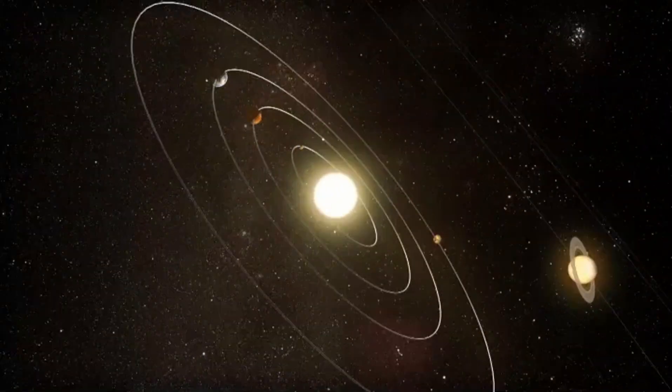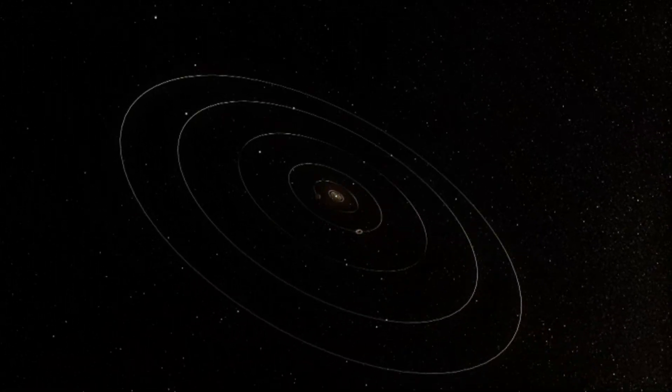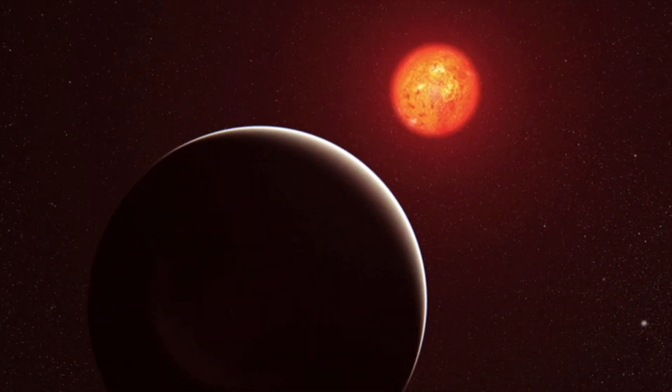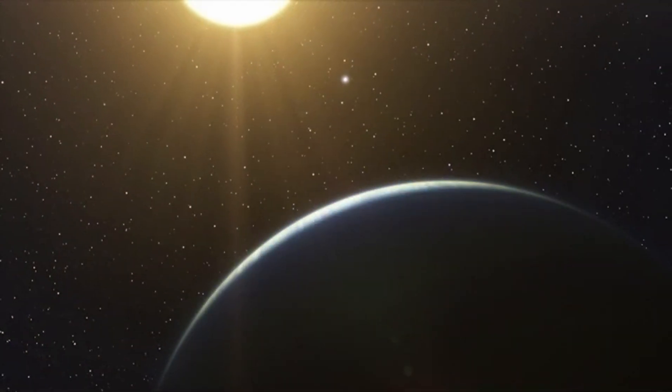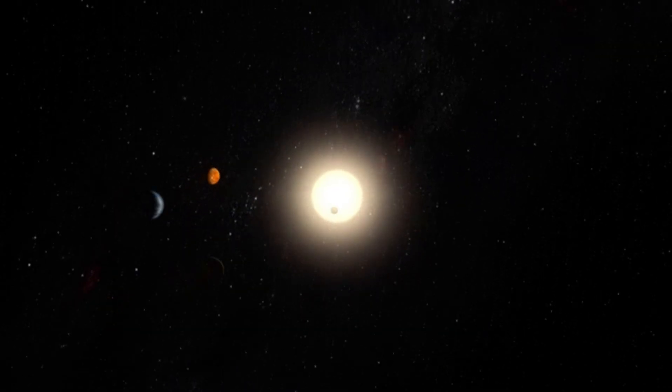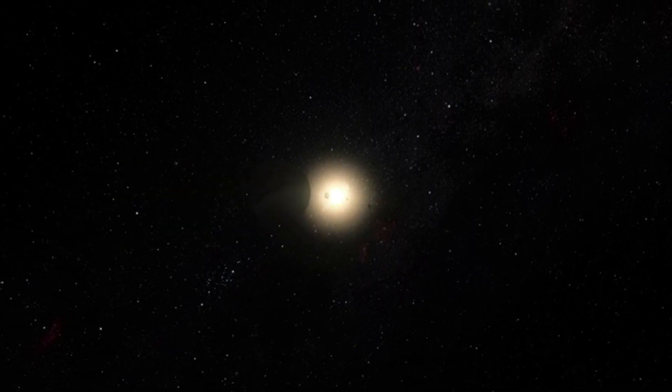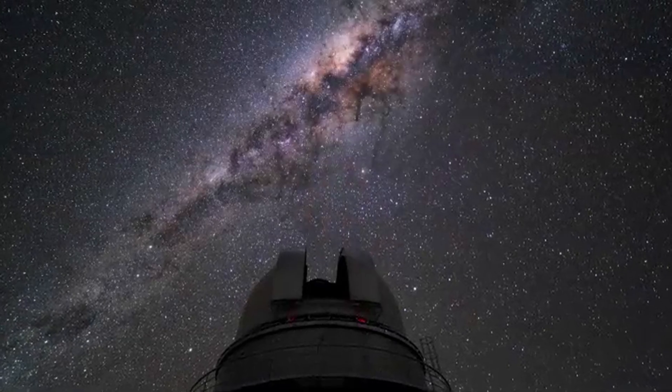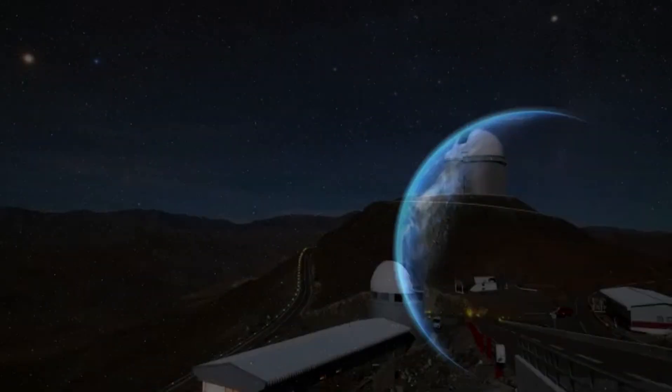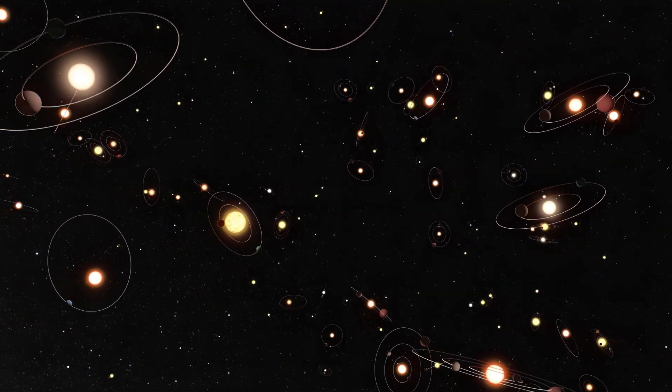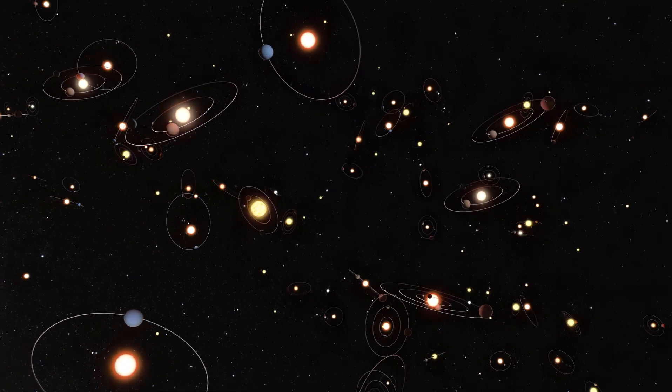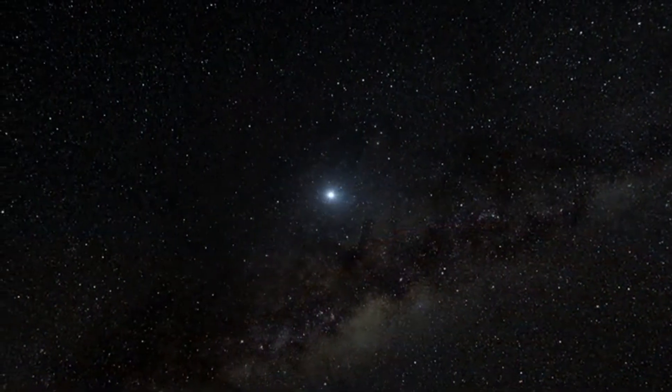There is also the big challenge this discovery presents to our current understanding of where life can exist. For the longest time, scientists thought that planets orbiting red dwarf stars were not exactly life-friendly. These stars often unleash powerful solar flares, which could easily wipe out an atmosphere and leave a planet barren. Yet here we are, with potential evidence that not only life but intelligent life could be thriving in such conditions. If that's the case, it would completely change how we think about where life might exist in the universe. Red dwarfs are actually the most common type of star in our galaxy. And if life can thrive on Proxima B, that means there could be many other planets around red dwarfs where life could also exist. Suddenly, the universe is looking a lot more crowded.